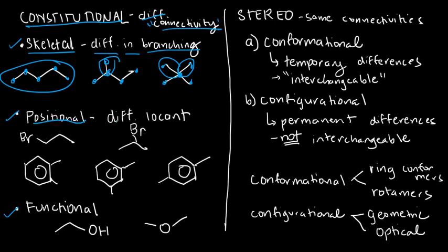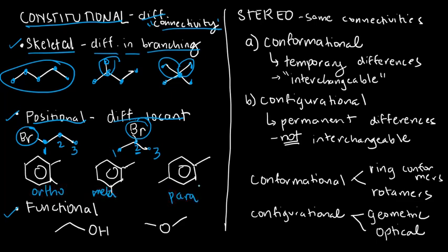For positional isomers, you're talking about different locants. For example, with three carbons, locant assignment is one, two, three. In my two compounds, one bromine is at position one, and in the other it's at position two — aside from the bromine's position, nothing changed. So those are positional isomers. Similarly, the ortho, meta, and para arrangements around benzene — ortho is directly beside, meta has one carbon distance, para is opposite — playing around with the positions of substituents also gives positional isomers.